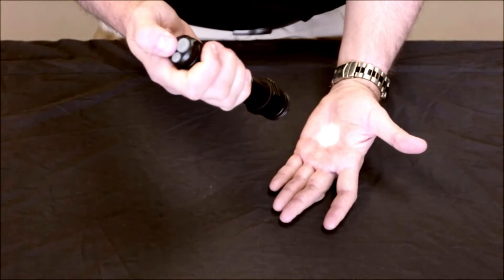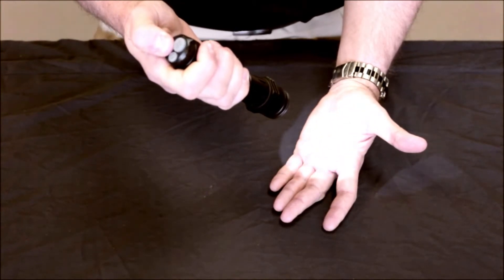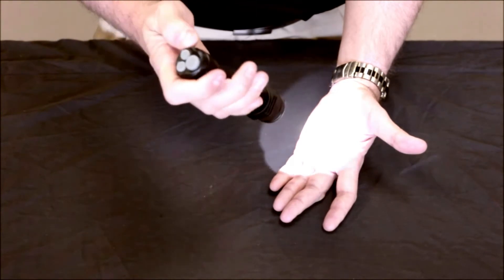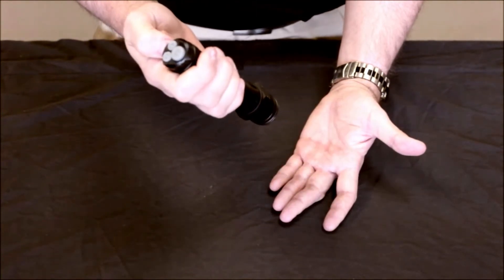You can press it again and hold to brighten it back up to your desired level to where you'd like it. And then of course you turn it off by clicking again.